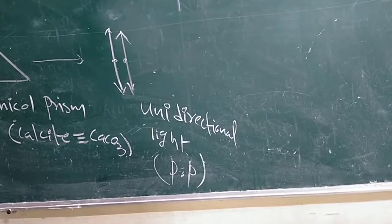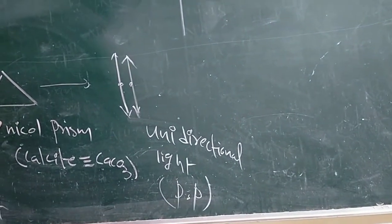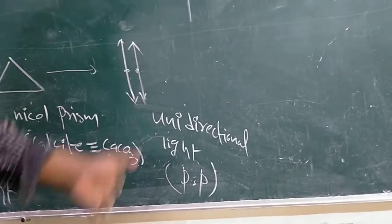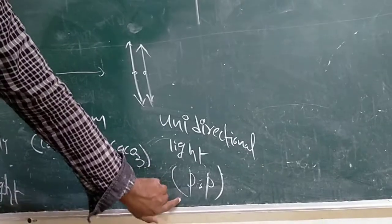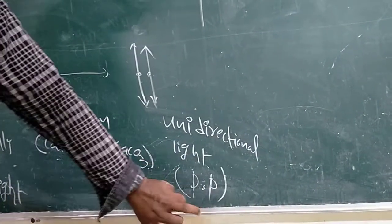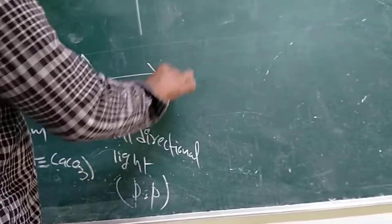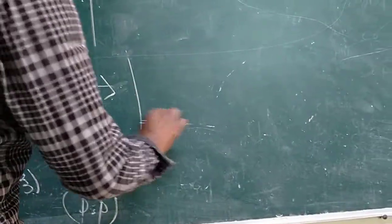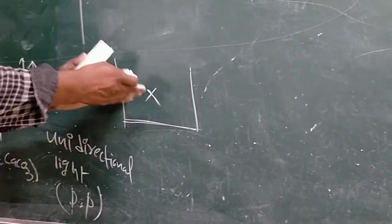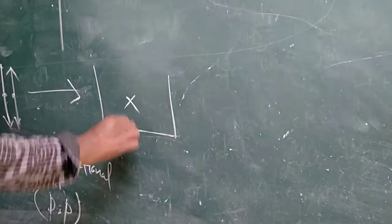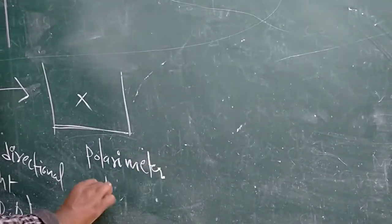This unidirectional propagated light, when passed through the Nicol prism, changes direction to become unidirectional. This unidirectional propagated light is called plane polarized light. This plane polarized light is then passed through a polarimeter tube containing a compound X solution.